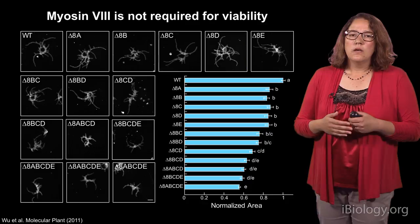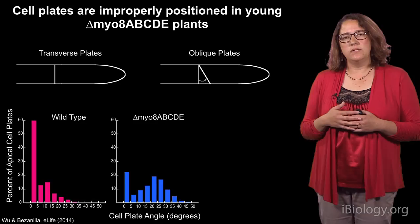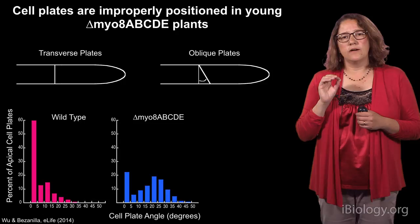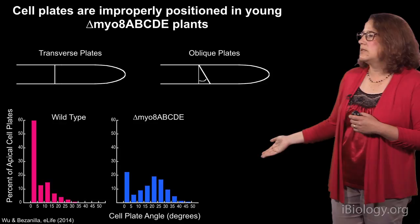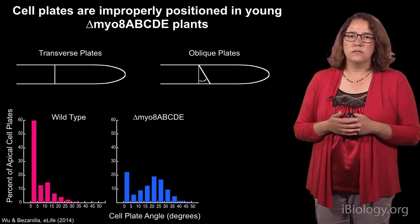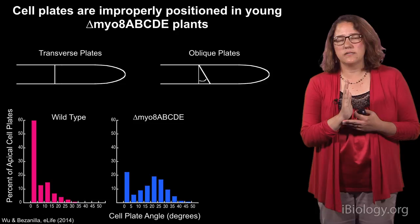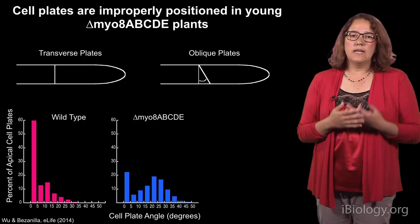If you look carefully at these young plants, we notice there is also a defect in positioning of the cell plate. Wild-type plants that are five days old have transverse cell plates, or an angle of zero. The myosin 8 mutant, as you can see from this histogram, has a large population of cells that have oblique cell plates. Instead of positioning the cell plate perfectly transversely to the long axis of the cell, there's slop — there's some mistake.